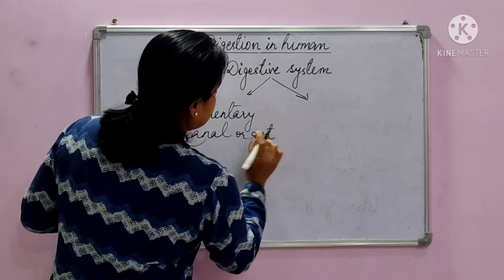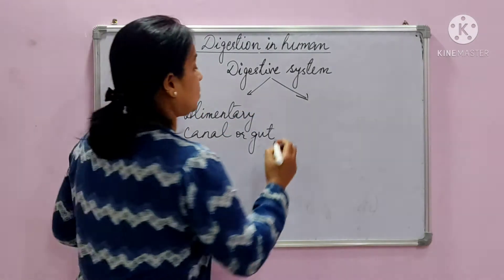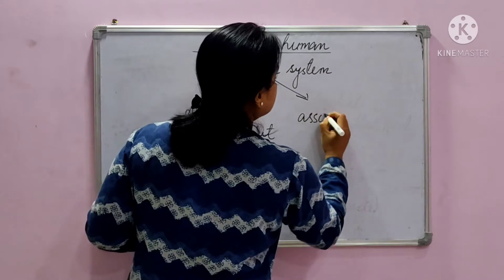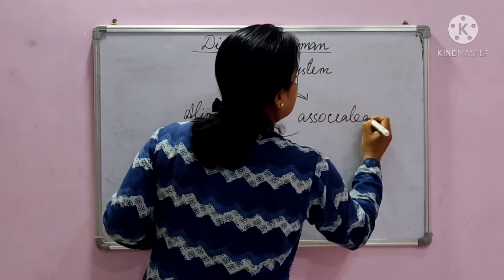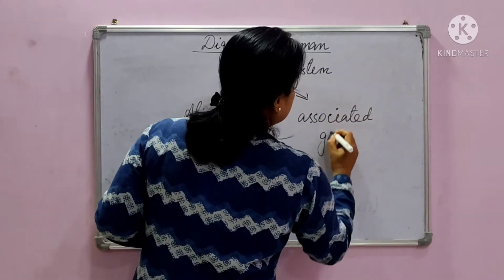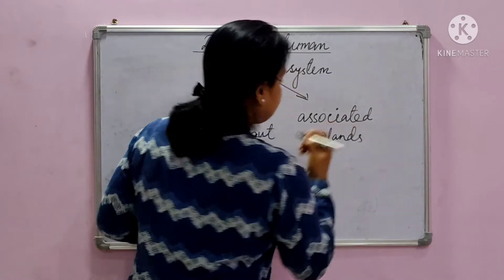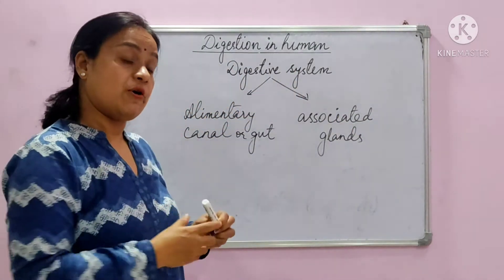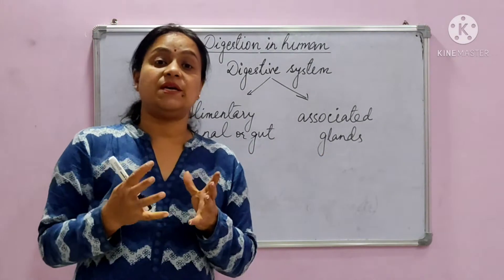The second is the associated glands, or you can say the helping glands. So digestion is carried out by the set of organs present in the alimentary canal and the associated glands.